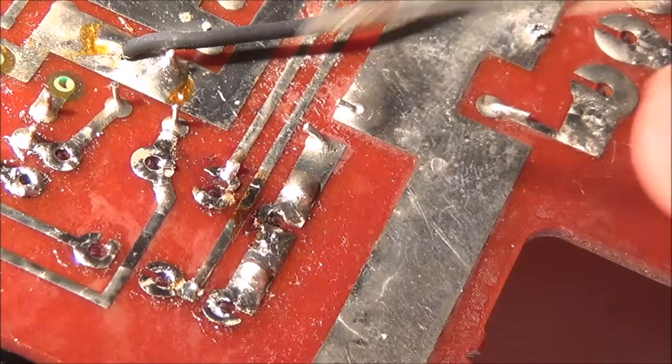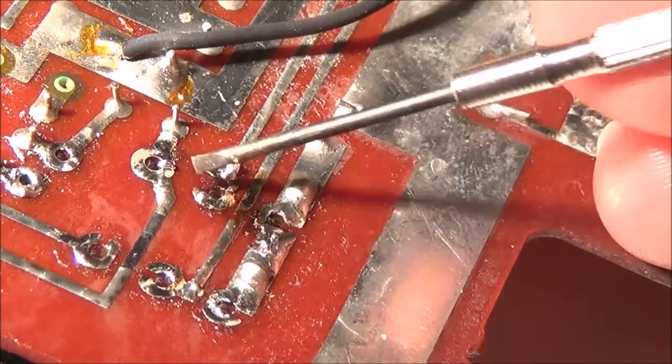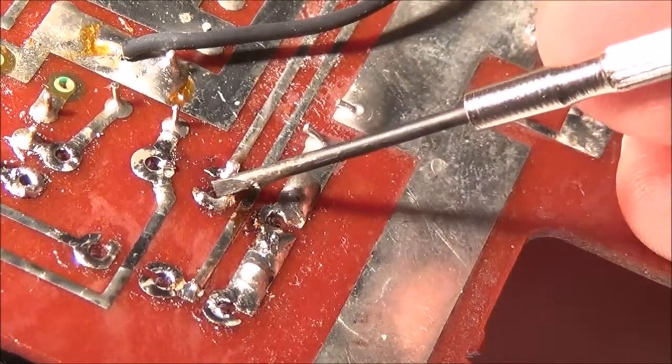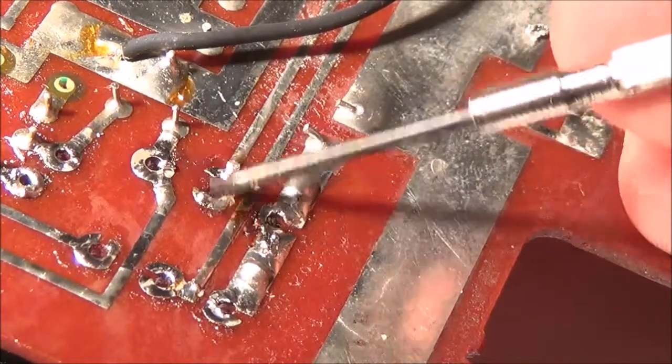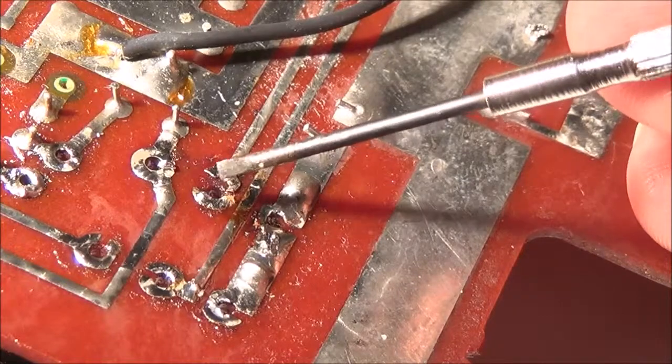Once I unsoldered the pot, I noticed that this pad here was loose and destroyed. That's probably why there was a big old gob of solder on there. Somebody tried to bridge that.